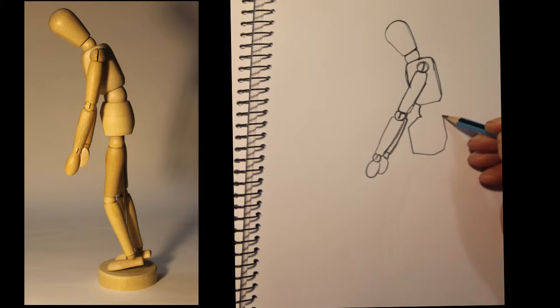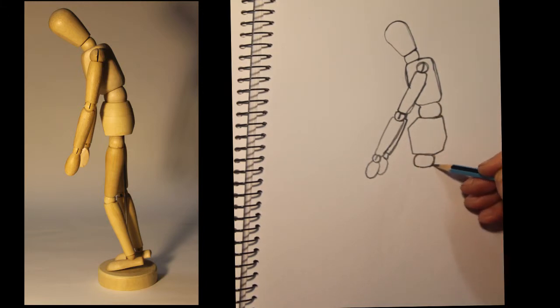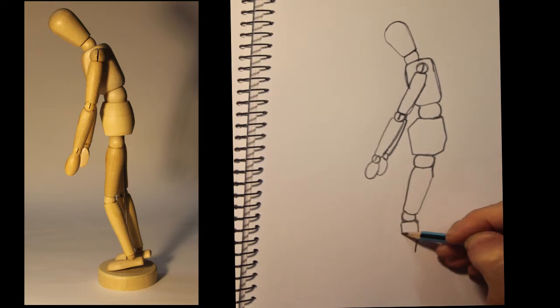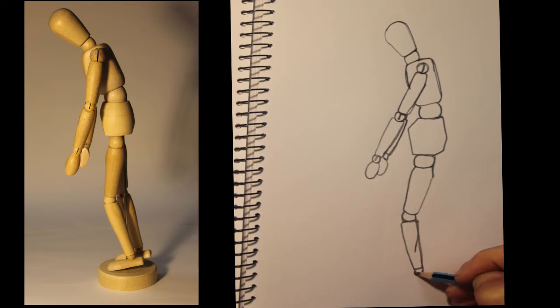So you can see I'm going around. I'm looking at the model. And I'm trying to draw what's there and not what I think is there. And you'll also notice that I'm not taking my pencil off the paper at all.